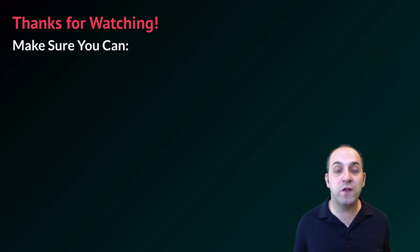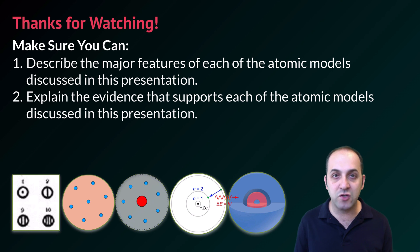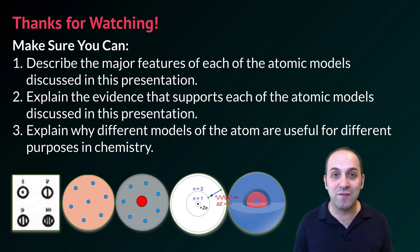Thanks so much for watching this video. Make sure that you can do the following things here at the end. Make sure that you can describe the major features of each of the atomic models discussed in this presentation. Make sure that you can explain the evidence that supports each of the atomic models we've discussed. And finally, make sure that you can explain why different models of the atom are useful for different purposes in chemistry. If you can do each of those things, you're doing great. If not, that's okay too. Take a moment and write down any questions that you have. You can always get in touch with me through the comments below the video. Thanks again for watching. Have a great day.